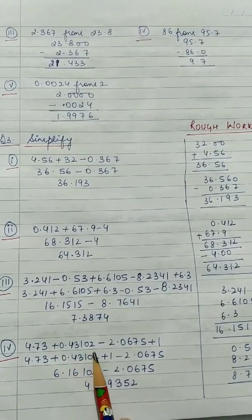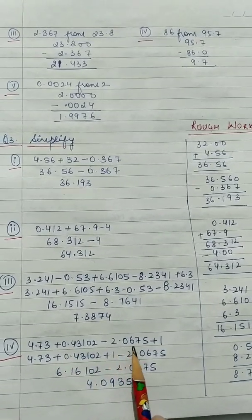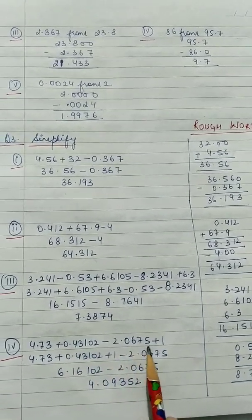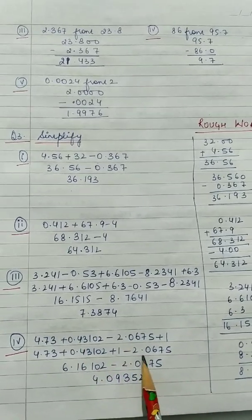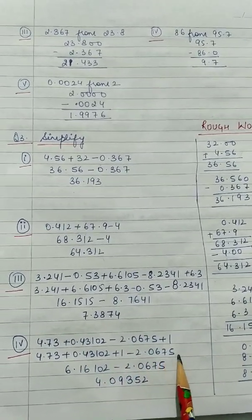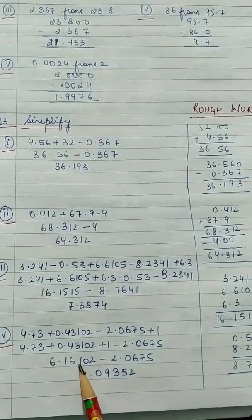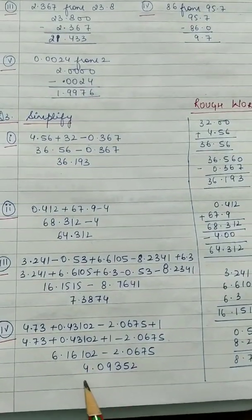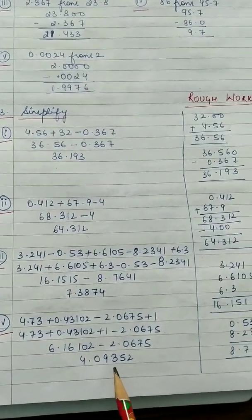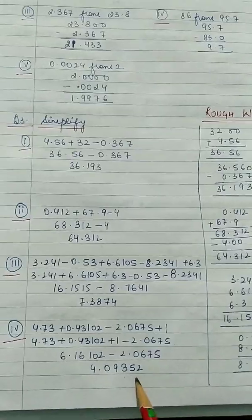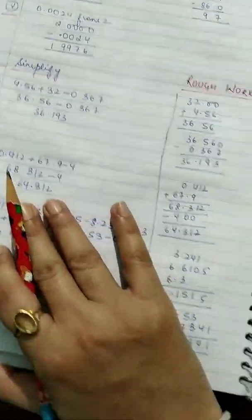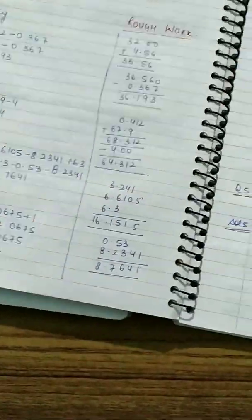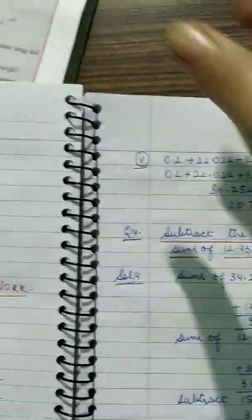Fourth part: 4.73 plus 0.43102 minus 2.0675 plus 1. Write all the positive terms together and subtract minus 2.0675. When you subtract, you will get 4.09352. The fifth part is similar — you can try that one by yourself.